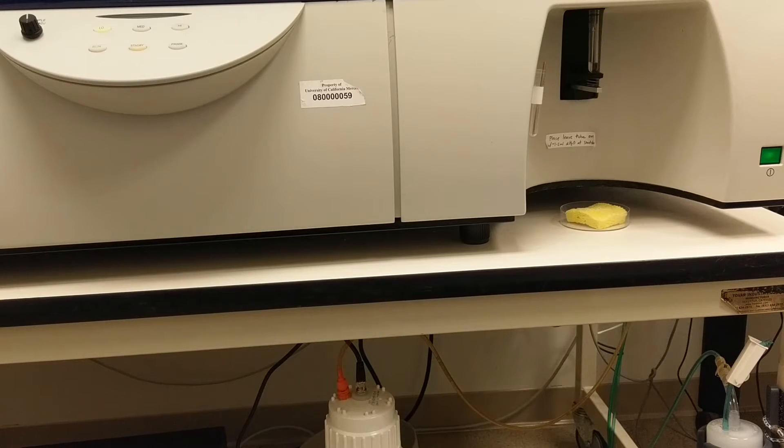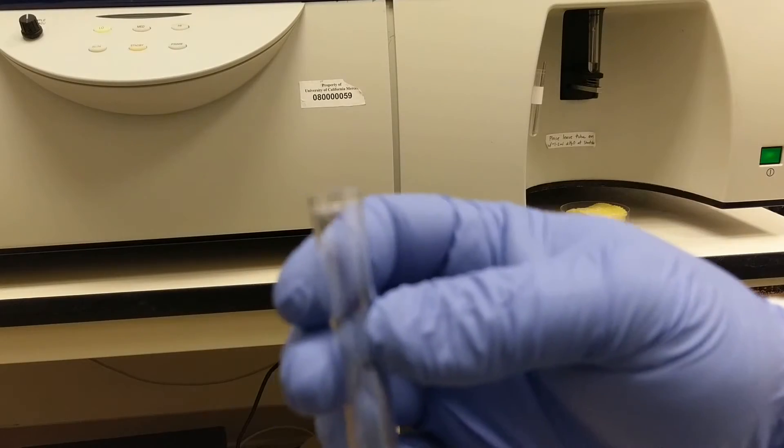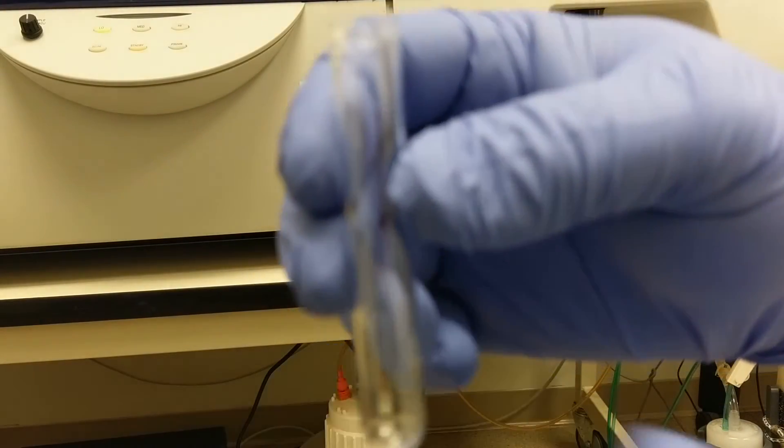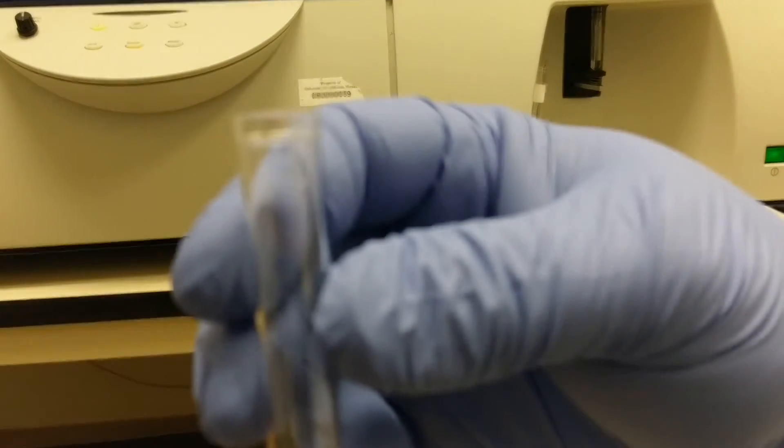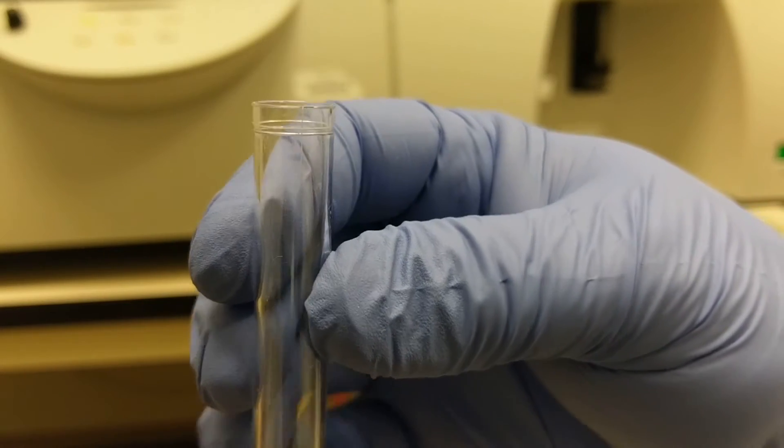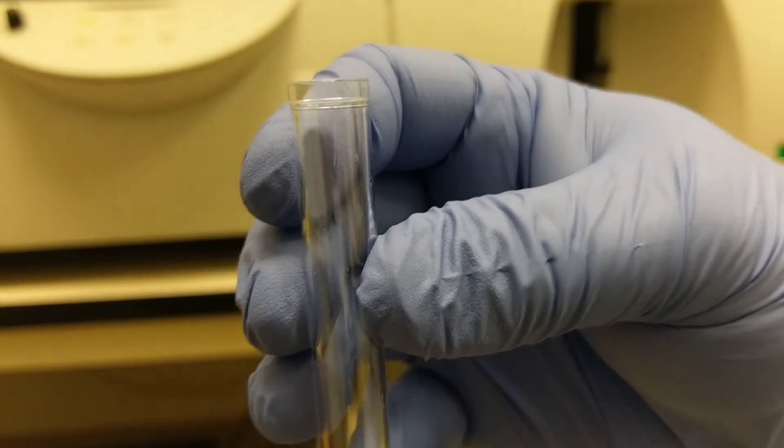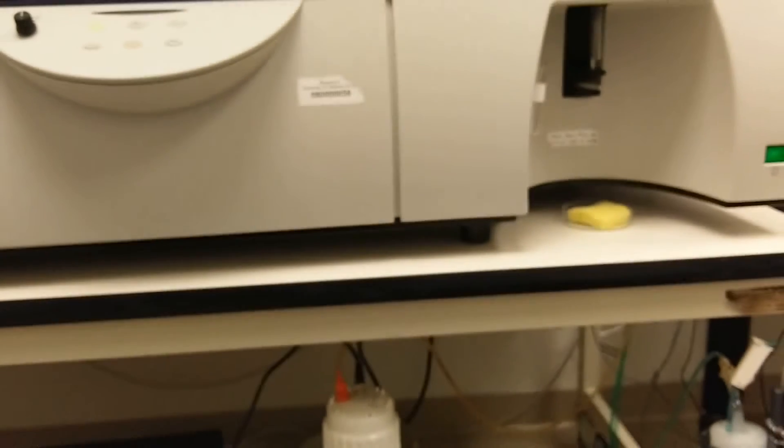Second problem that can happen is you can have a hairline crack in your tube. For example this tube, it's almost imperceptible but it has a hairline crack in it. That will not allow the SIP to pressurize or the tube to pressurize, and if the tube can't pressurize no sample can run through the instrument. So again the solution to this would be try a different tube and see if that one runs, and if so put your sample into a new tube.